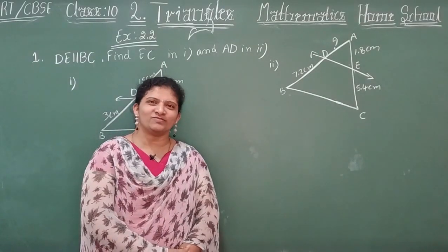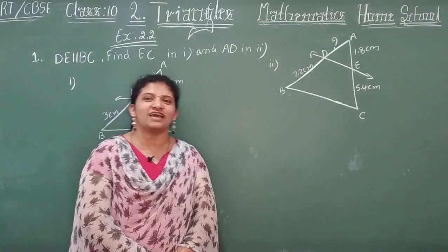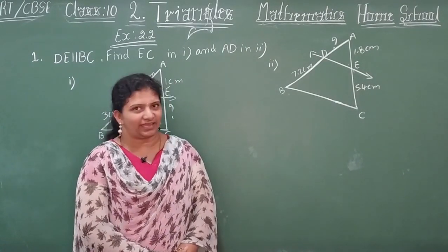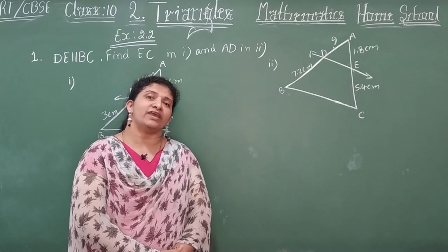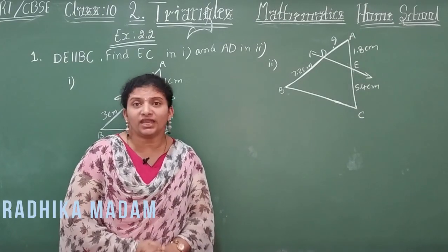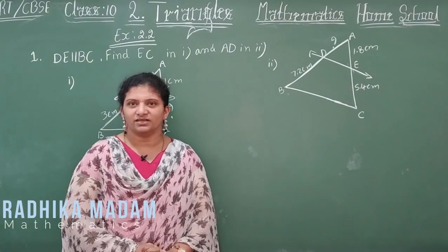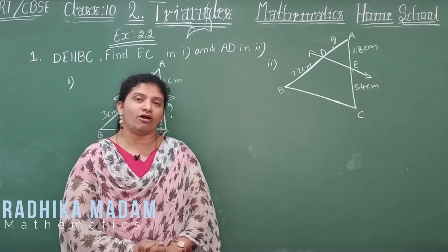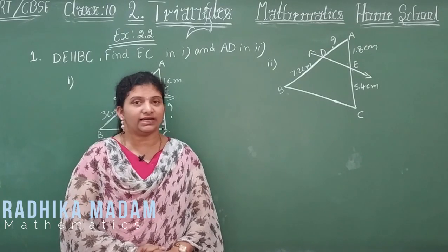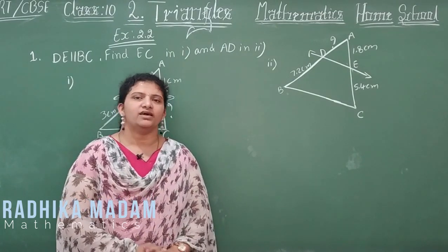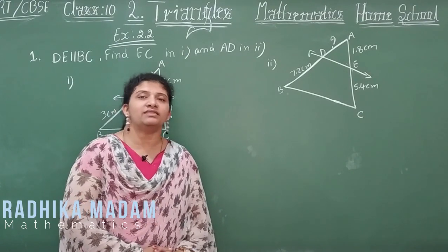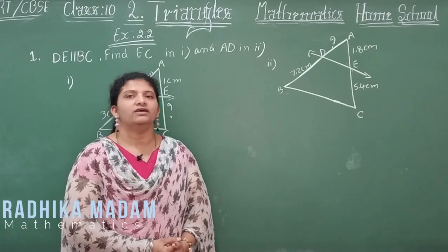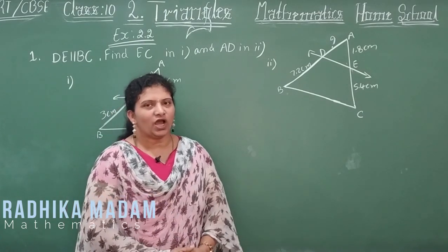Hi, hello, welcome to your home school. This is your Mathematics NCERT of CBSE, second chapter — Triangles. Last session, we completed very important theorems: BPT, Converse of BPT, and Corollaries, with some examples. Those are the basics we apply for this exercise — Exercise 2.2.